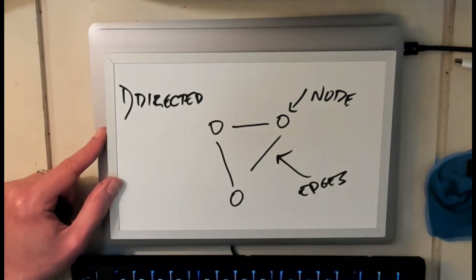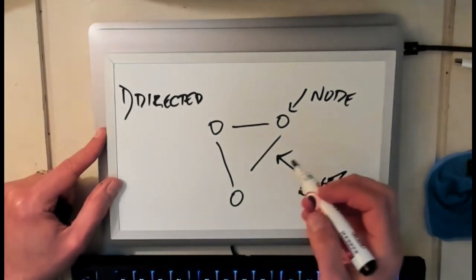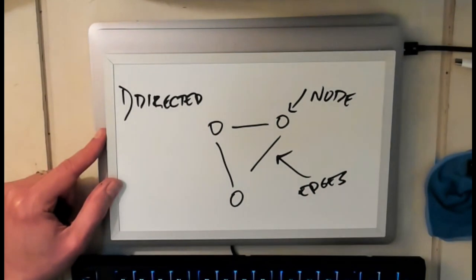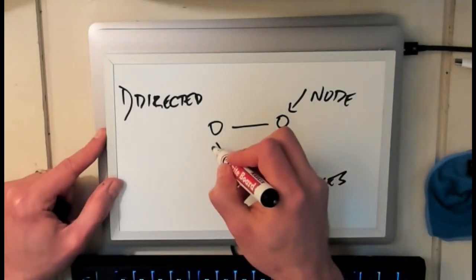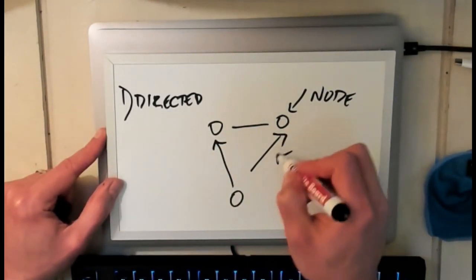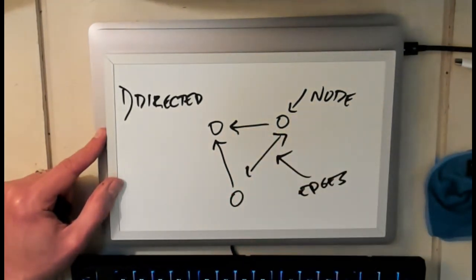So the first question is do the edges have a direction. These edges don't. Usually when you see a graph drawn if it's undirected you won't see arrows. If it's directed you'll see arrows. So for example this could be one representation of a directed graph.